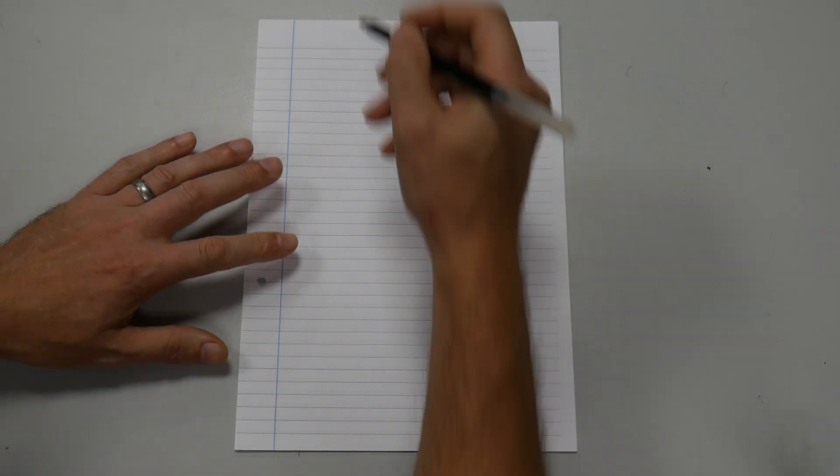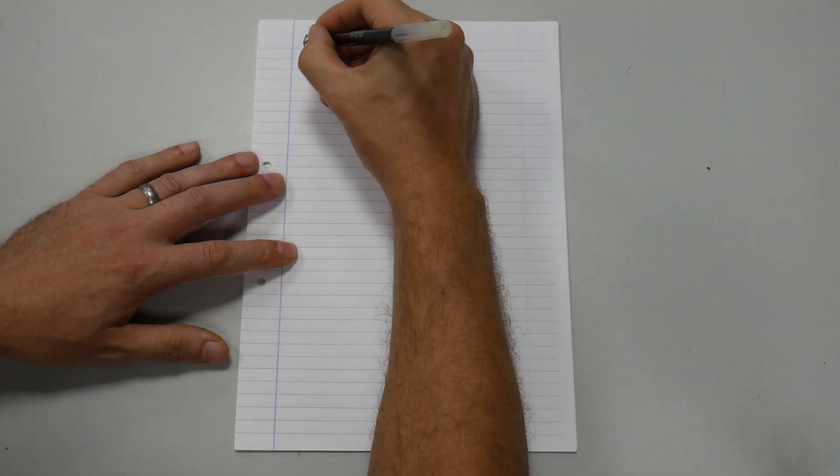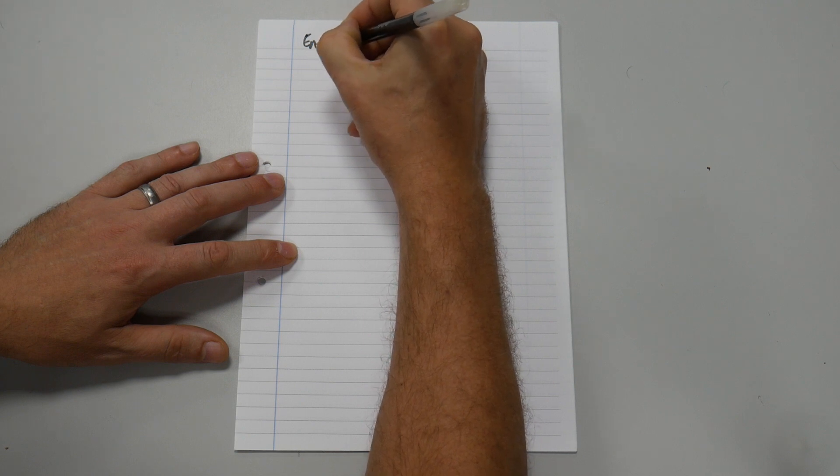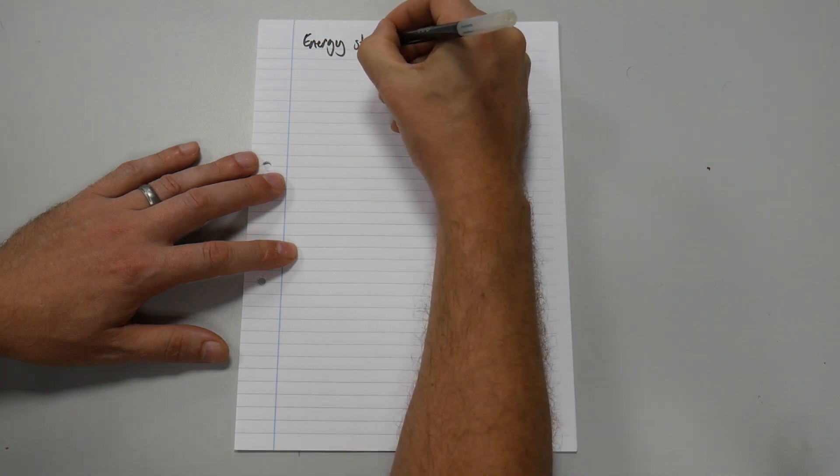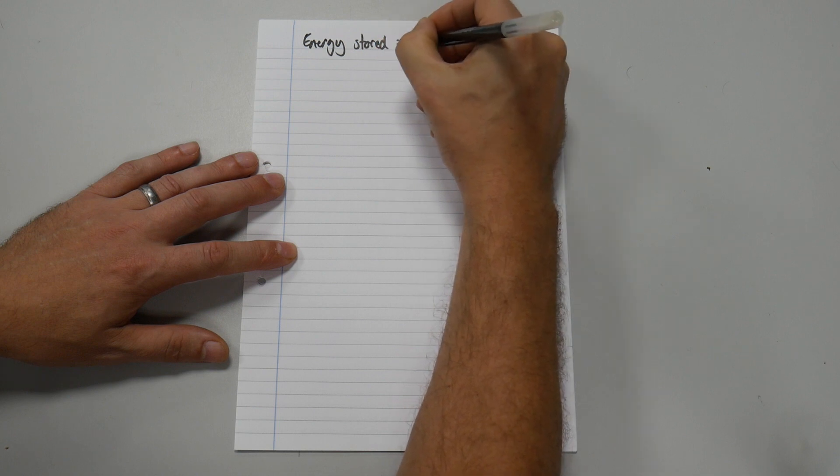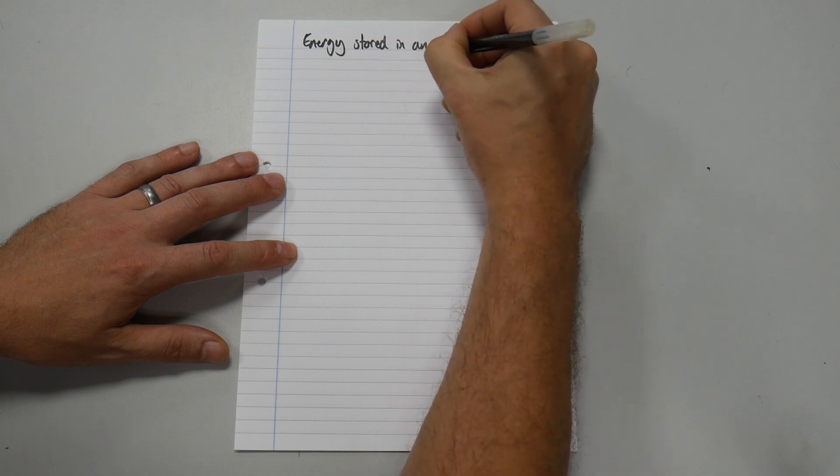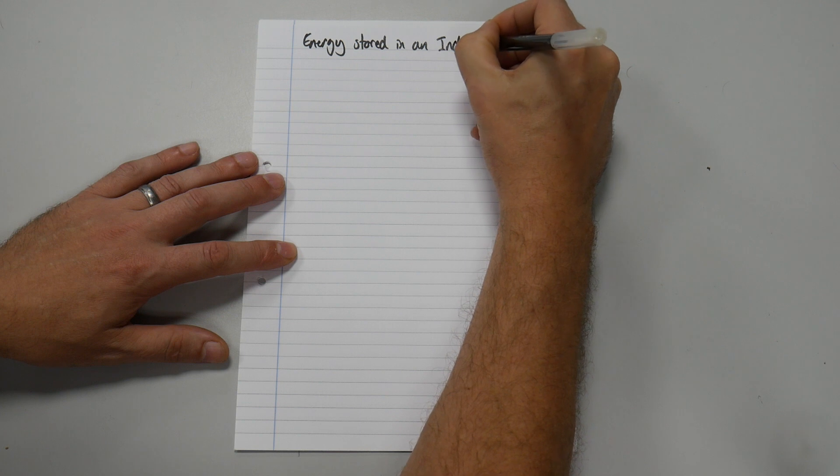The level three essentials formula video. This is for energy stored in an inductor. So let's write the title. Energy stored in an inductor.